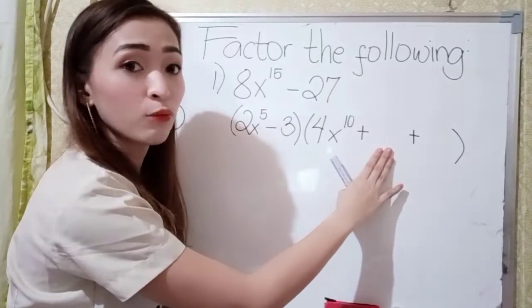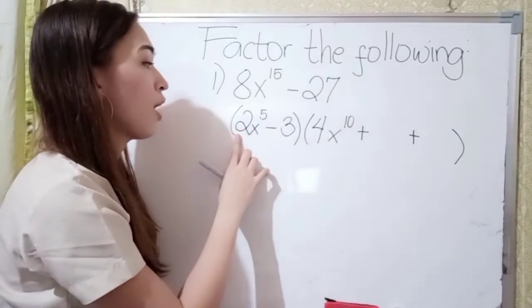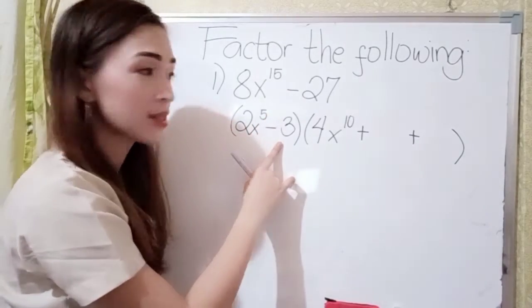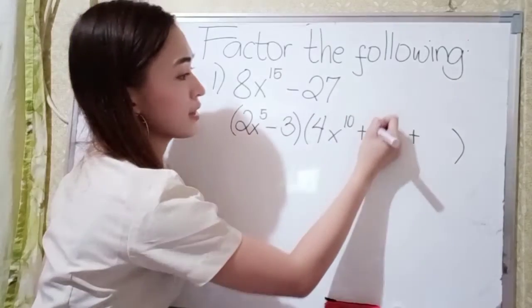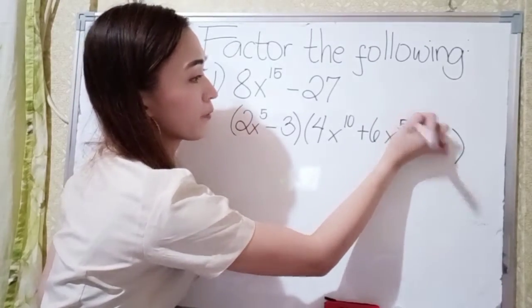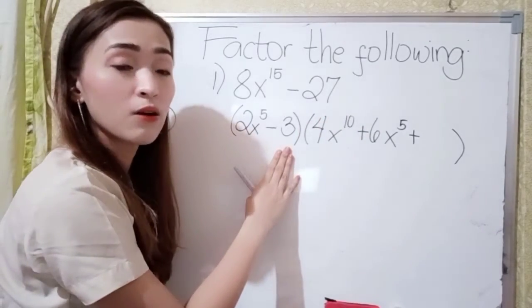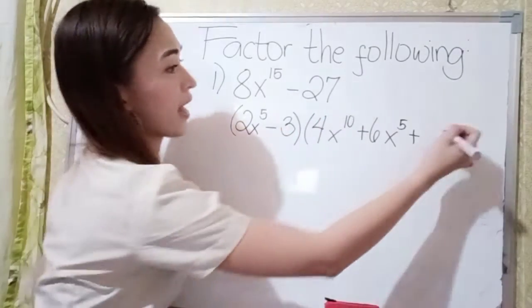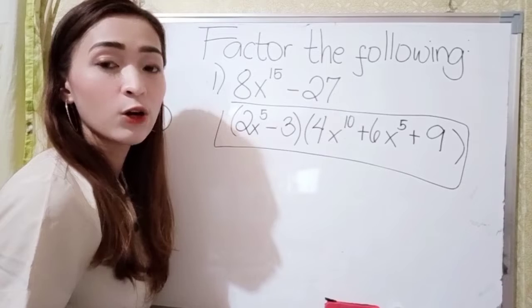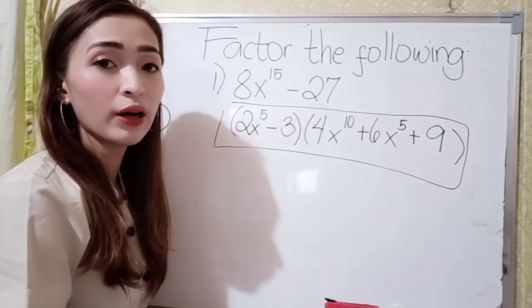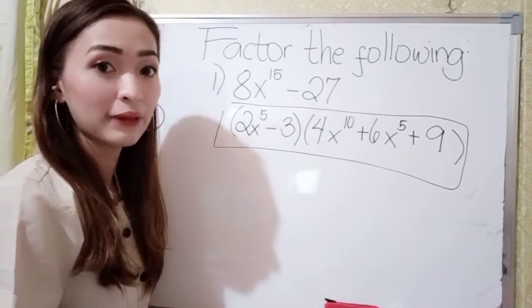In our middle term, what we're going to do is multiply the first and the last term. So, 2x to the 5th power times 3 is 6, because 3 times 2 is 6. So, 6x to the 5th power. In our last term, let's square the last term. 3 times 3 is 9. So, this is our final answer: 2x to the 5th power minus 3, times 4x to the 10th power plus 6x to the 5th power plus 9.